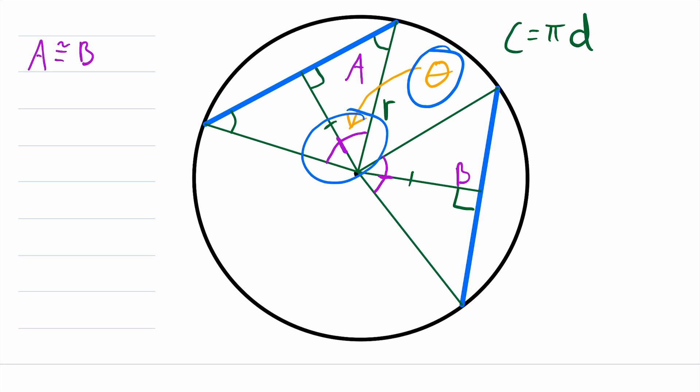So since this purple angle has a measure of θ, and these two smaller blue angles are equal, and they add up to θ, we know that both of these smaller blue angles have to be equal to θ over 2. Because again, they have to be equal, and they have to add up to θ.